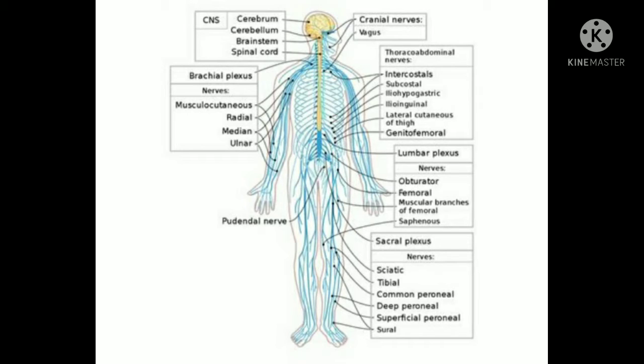Nerves arising from the brain are called cranial nerves. Nerves arising from the spinal cord are called spinal nerves.